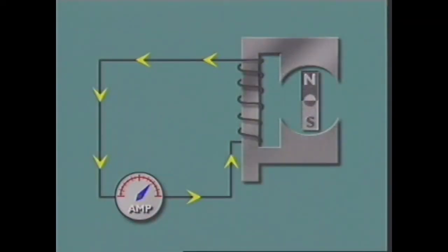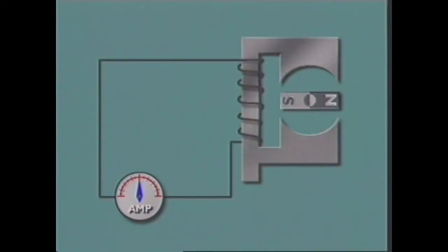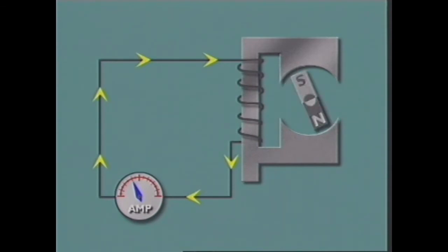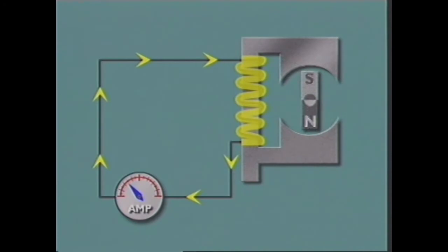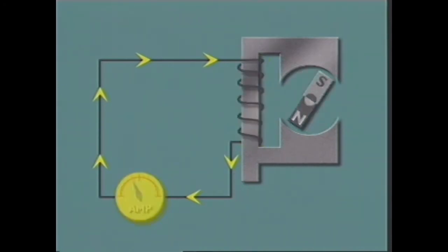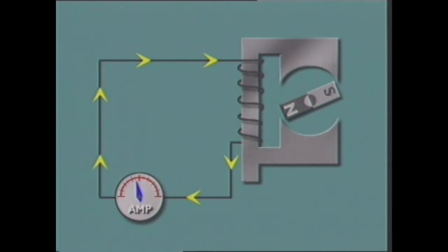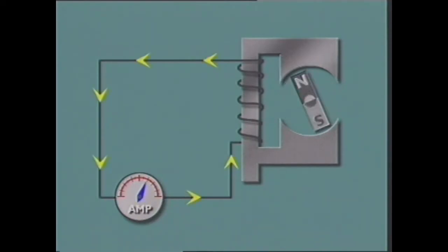In this simple version, a bar magnet rotates in an iron yoke which concentrates the magnetic field. A coil of wire wound around the stem of the yoke forms part of a circuit with an ammeter that indicates current flow. As the magnet turns, voltage is induced in the coil producing a current flow.